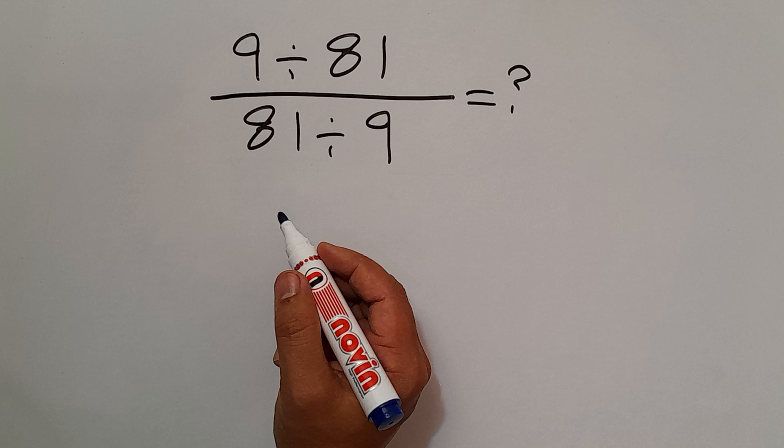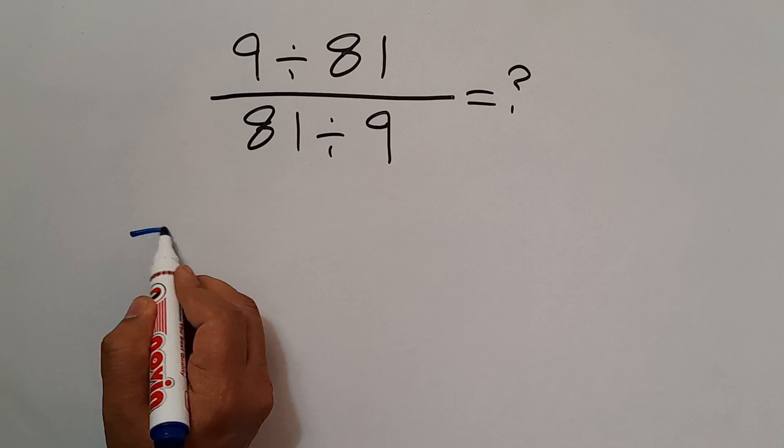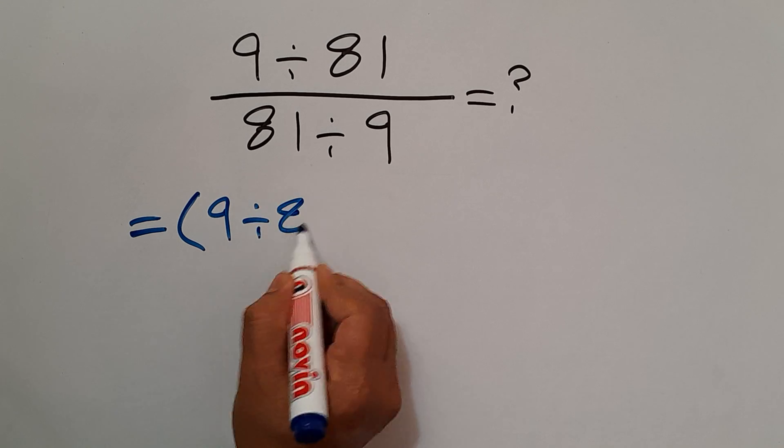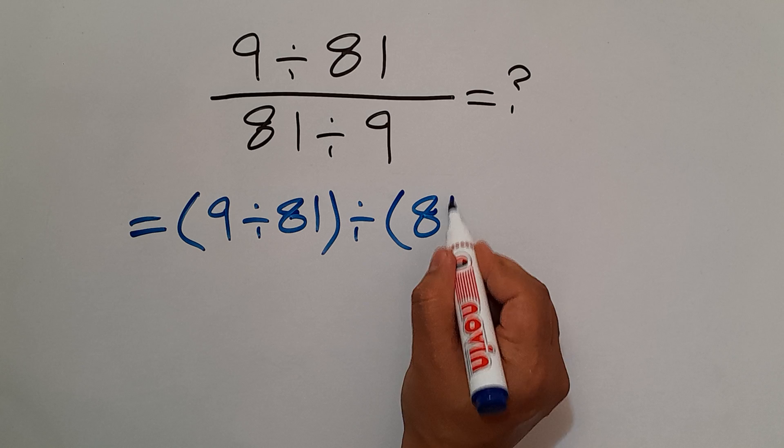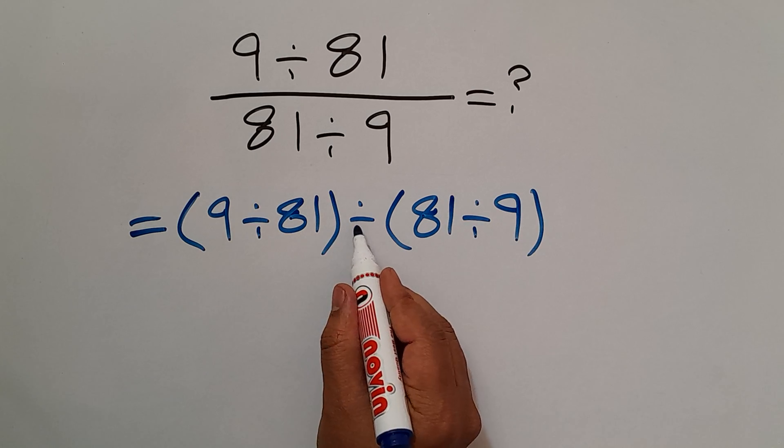Are you ready to solve? Let's go and get started. Instead of this fraction we can write parentheses 9 divided by 81 divided by parentheses 81 divided by 9, the numerator divided by denominator.